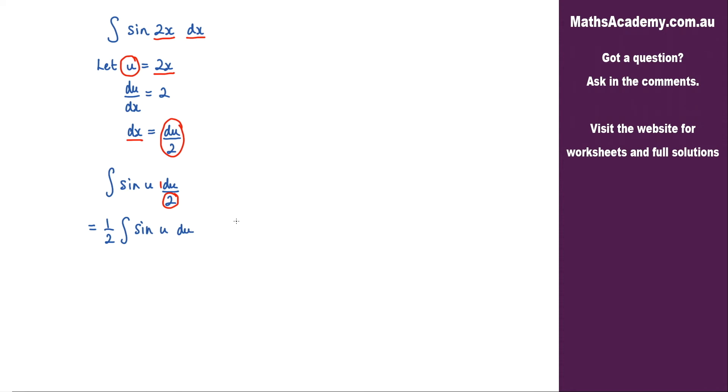That's a very simple integral. What we'd get is a half. The integral of sine is negative cosine, so I've got a negative here and then cosine of u. And the last step is just to substitute back in for u.